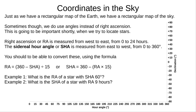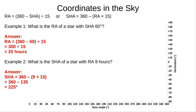The formula is shown on screen, along with two examples. Pause the video now to try them out. Example 1: Right ascension is (360 minus our sidereal hour angle of 60) all divided by 15. That's 300 divided by 15, or 20 hours. Example 2: Sidereal hour angle is 360 minus our right ascension of 9 times 15. That's 360 minus 135, or 225 degrees.